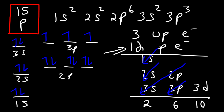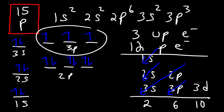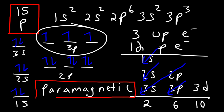Another way to find paired electrons is to take the total, 15, and subtract the unpaired electrons: 15 minus 3 equals 12 paired. Now, is phosphorus paramagnetic or diamagnetic? Because it has 3 unpaired electrons, it is paramagnetic. Paramagnetic elements contain unpaired electrons and are weakly attracted to an external magnetic field. Diamagnetic elements contain only paired electrons and are weakly repelled by an external magnetic field.